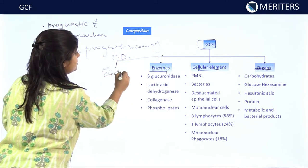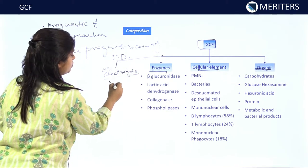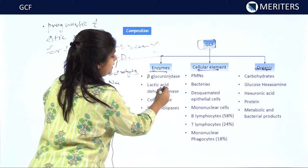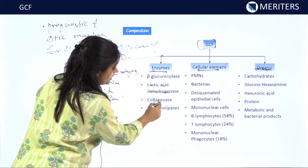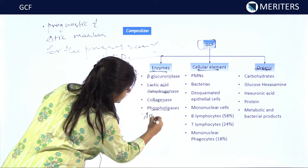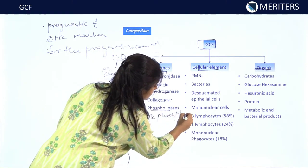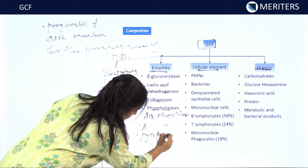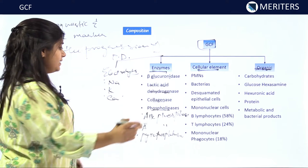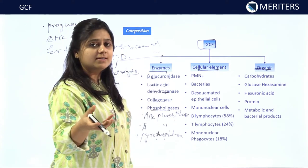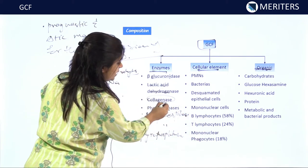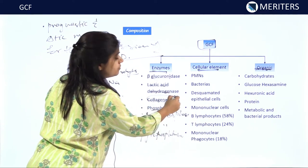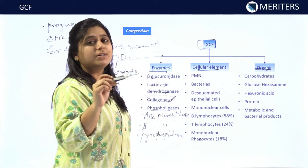The electrolytes present in GCF are sodium, potassium, and calcium. Enzymes present include beta-glucuronidase, lactic acid dehydrogenase, collagenase, phospholipase, and alkaline phosphatase. During inflammation, degradation of collagen occurs, so the amount of collagenase increases. If the level of collagenase is elevated in GCF, it indicates active periodontal disease.